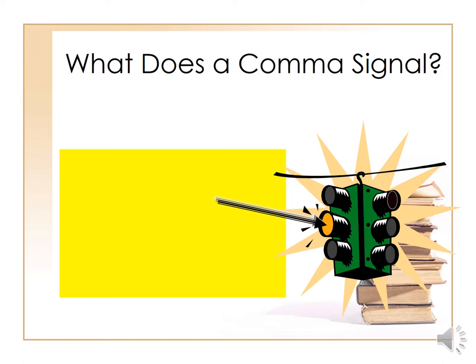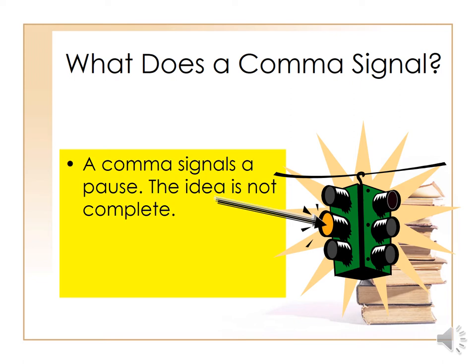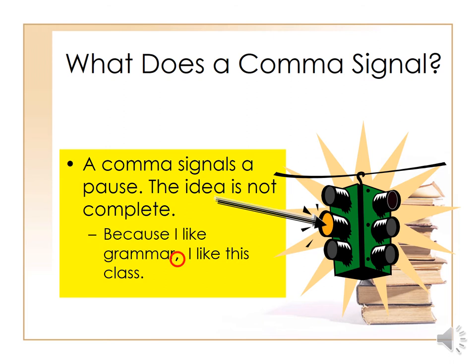Before we move on, I want to introduce two ideas. The first one is the function of a comma in English — what does it signal? Basically, it signals a pause, meaning the idea is not complete. You did not finish the sentence. Look at the example: 'Because I like grammar, I like this class.' The comma here is a pause — you did not finish 'Because I like grammar,' and then you continue with 'I like this class.'